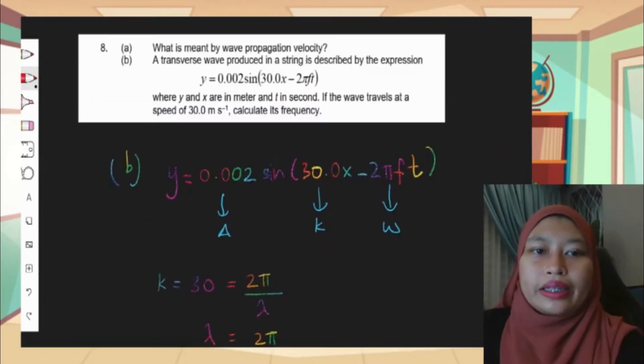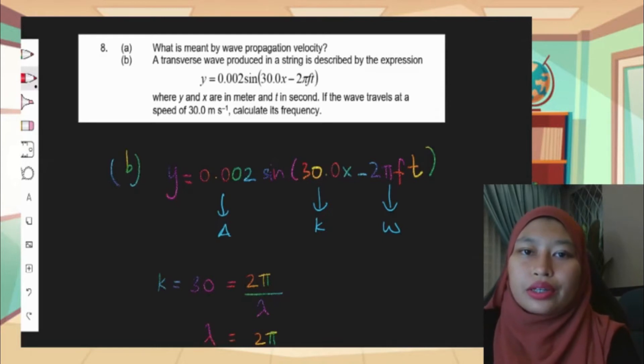Number 8: what is meant by wave propagation velocity? For 8a, I want you to find it yourself in your notes. 8b: a transverse wave produced in a string is described by the expression y equals 0.002 sine 30x minus 2 pi f t, where y and x are in meter and t in second. If the wave travels at a speed of 30 meter per second, calculate its frequency.